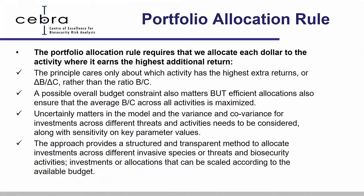Rather than looking at benefit-cost, look at a portfolio rule: where is the best rate of return? In many cases you can calculate it. Ask what's the extra benefit relative to the extra cost, and the ratio of those two values. Uncertainty matters — rates of return must be risk-adjusted for probability effects — but the basic principle holds. The portfolio approach tells you that pursuing rates of return will always do better in terms of overall benefit-cost ratios.